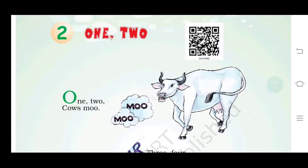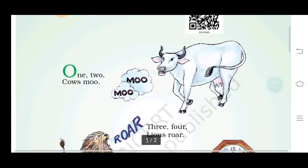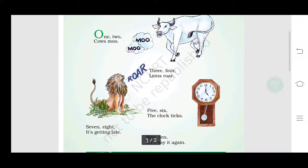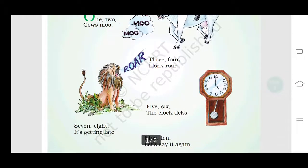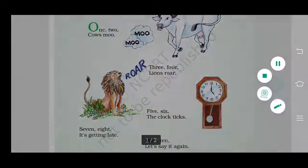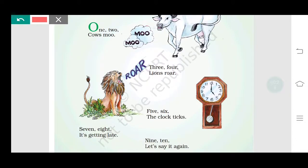So let's start the reading. Here it is: One two, cows moo. Three four, lions roar. Five six, the clock ticks. Seven eight, it's getting late. Nine ten, let's say it again.